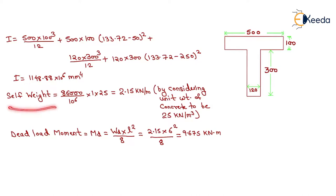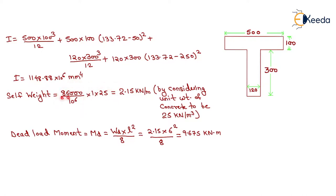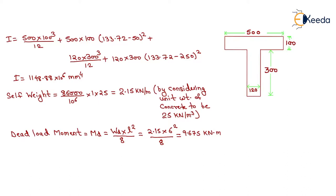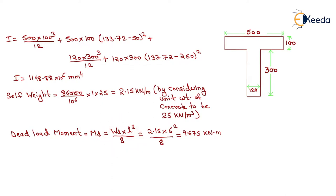Now we will calculate self-weight. Self-weight equals area × 1 × unit weight of RCC. So, (8600 / 10⁶) × 1 × 25 = 2.15 kN/m, considering unit weight of concrete as 25 kN/m³. Now we calculate dead load moment MD using WL²/8, and on putting all values we get MD = 9.675 kN·m.